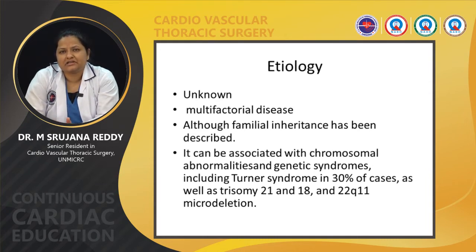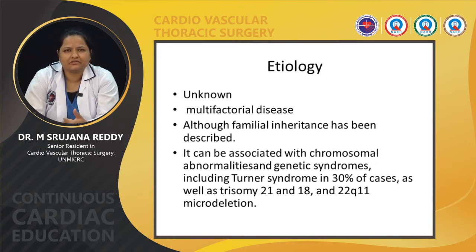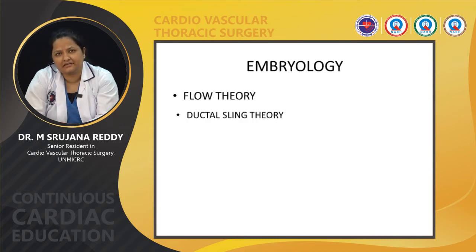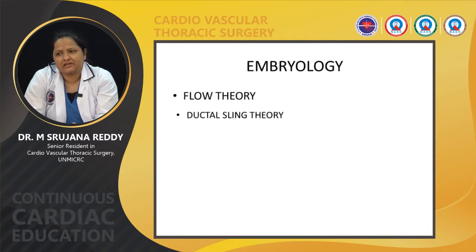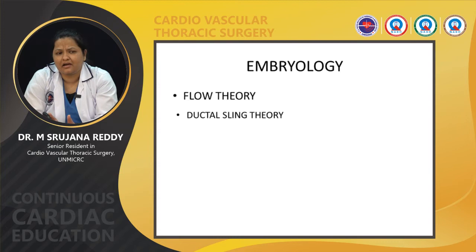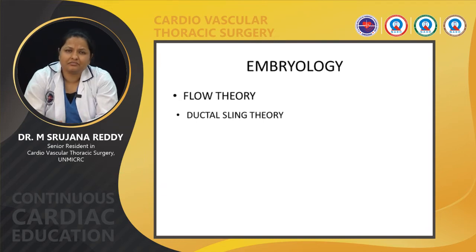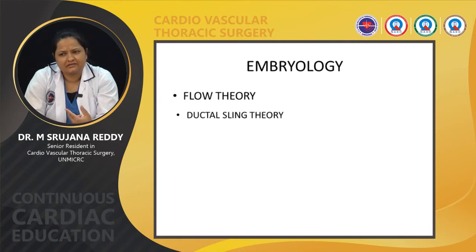It can be associated with chromosomal anomalies and genetic syndromes like Turner syndrome in 30% of cases, as well as 22q11 microdeletion syndrome or trisomies 21 and 18. Regarding embryology, two theories have been proposed: the flow theory, wherein left-sided obstructive lesions lead to lower flow across the arch and isthmus causing hypoplasia and coarctation, and the ductal sling theory, wherein a shelf-like lesion causes the coarctation of aorta.